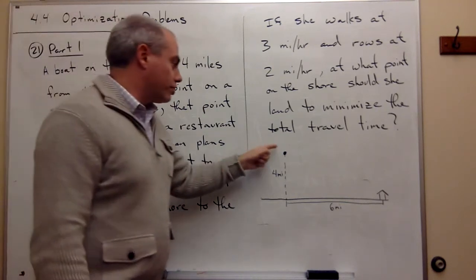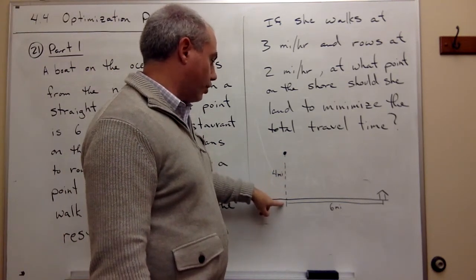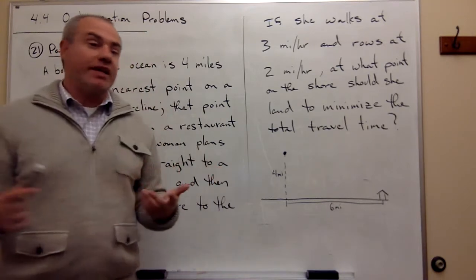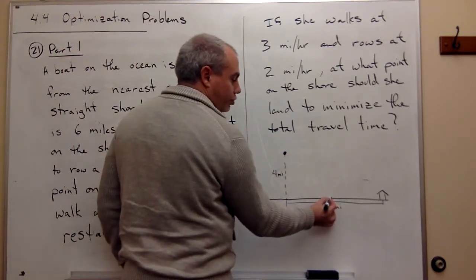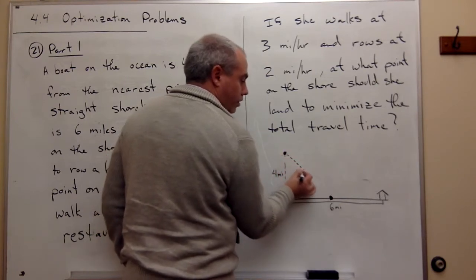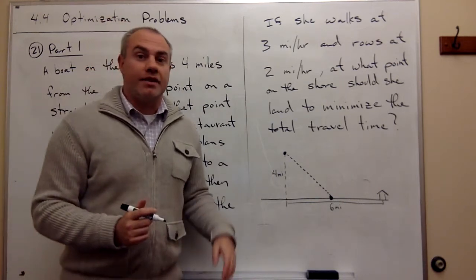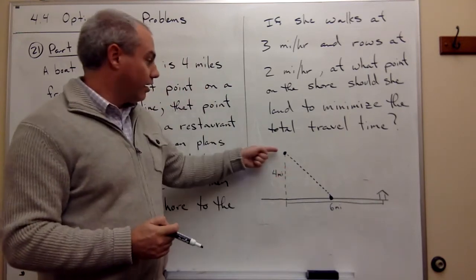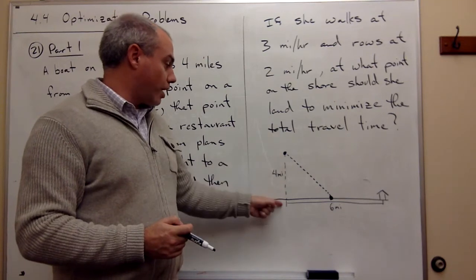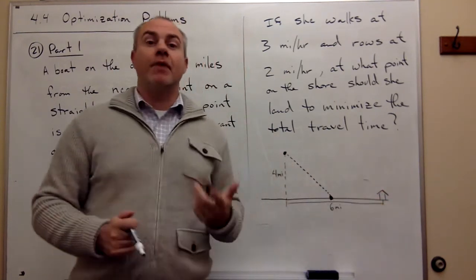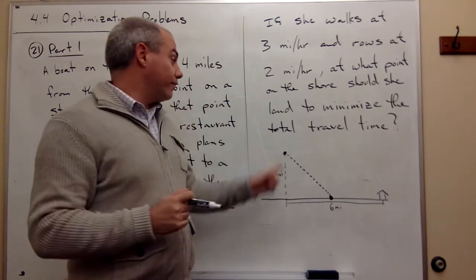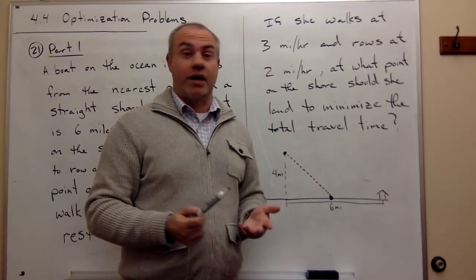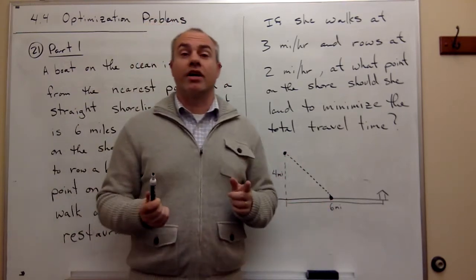I drew a little picture here — she's out at this point that's four miles from the shore, and that point on the shore is six miles from the restaurant. Ideally, she would like to pick some point on the shore, row her boat to that point, and then walk the rest of the way to the restaurant. There are some extreme cases: she could row straight across to this point and then walk all the way to the restaurant, or she could row all the way to the restaurant and skip walking altogether. Maybe the shortest way is somewhere in between — that's what we're trying to figure out.